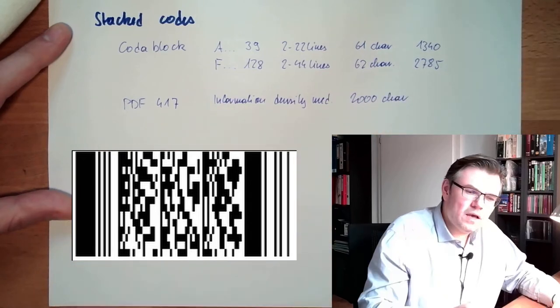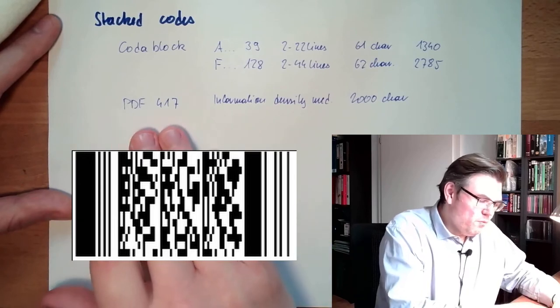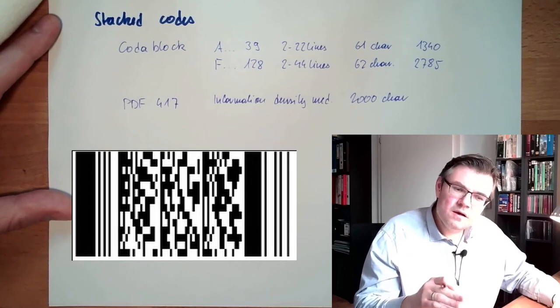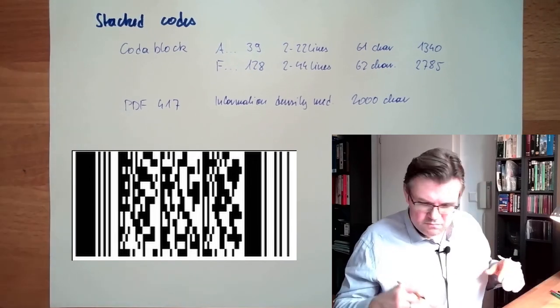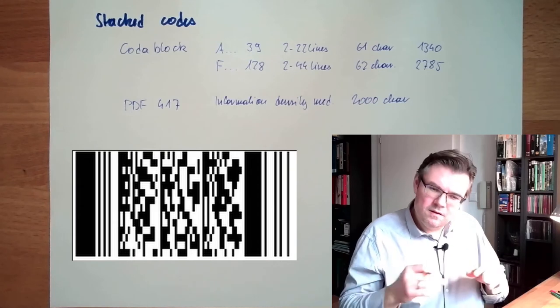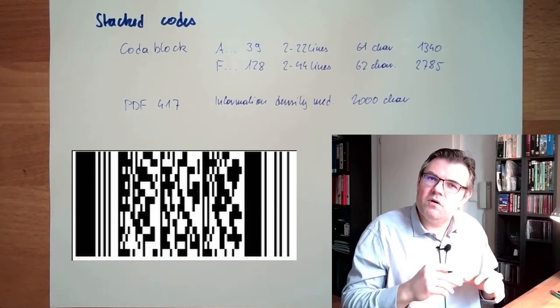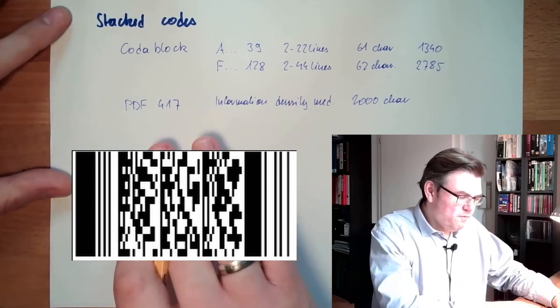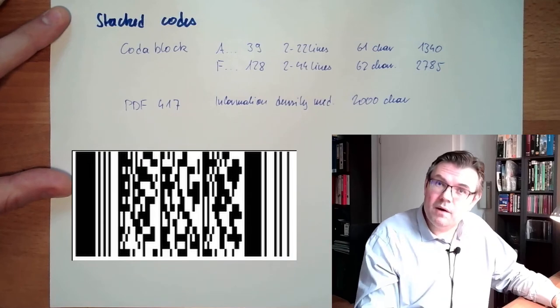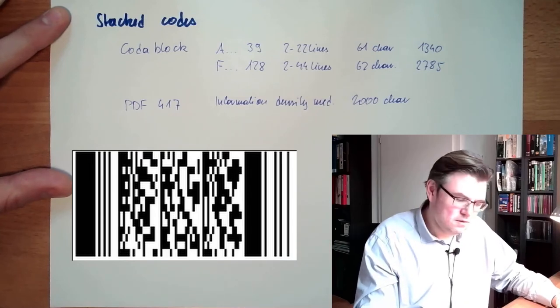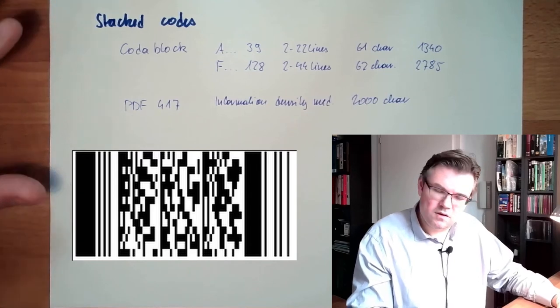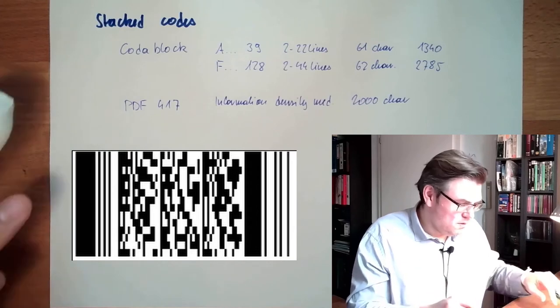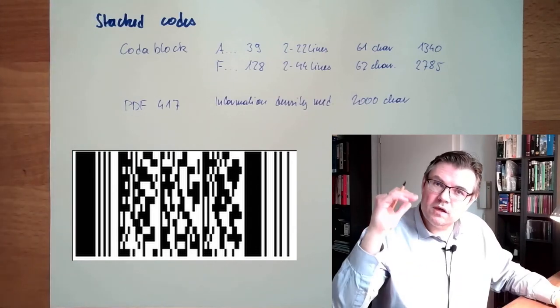PDF417, you've probably seen it already. If you ever use the lottery, this data block at the bottom of the lottery ticket is usually PDF417. Also boarding passes on airplanes use PDF417. There is this field with black and white patterns, this stacked code also working in lines.